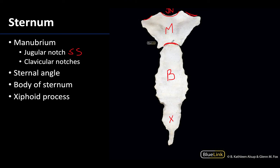It's not nearly as anteriorly projecting as the thyroid cartilage, but it should be a noticeable bump projecting anteriorly, and this gives us an indication of about the level of the second rib. That helps with being able to count ribs if you need to do so for a clinical procedure, or if you're wanting to place your stethoscope — you can get an idea of where the second rib is just by palpating that sternal angle. Moving inferiorly, the body has variable notches on the sides for articulation with the costal cartilages of the ribs, and then of course we have that variable xiphoid process.